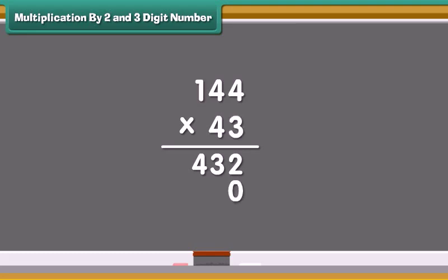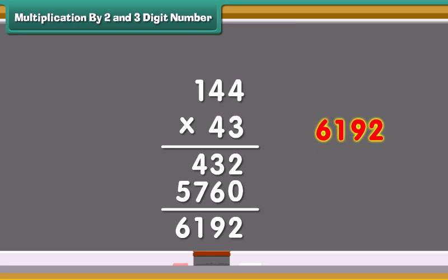Now, add a 0 on the 1's place and multiply 4 from the number on the 1's place. 4 times 4 is 16. Write 6 in 10's place and carry the 1 forward to the 100's place. Multiply 4 with the number on the 10's place and add 1 which was carried forward. Write 7 in the 100's place and carry the 1 forward to the 1000's. Multiply 4 with the number 1 on 100's and add 1 which was carried forward. Write 5 in the 1000's place. Now, add the 2 values. We get 6192. So, 144 multiplied by 43 is 6192.